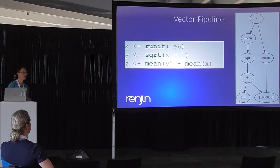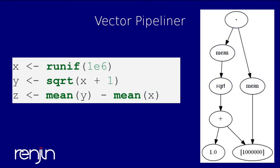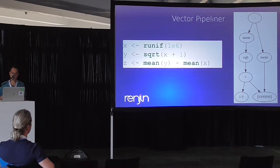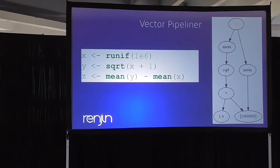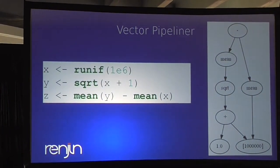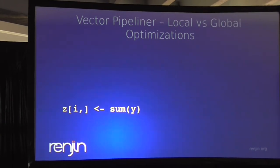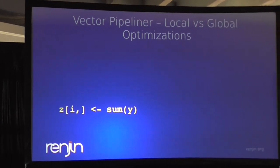For example, here are just three lines of R code: the first allocates data, the second transforms it by taking the square root of one plus x, and then we subtract the two means of X and Y. If you look at it as a graph of that computation, you can see those two means don't depend on each other — so in principle you could evaluate them in parallel. The question is how do we do that in the R language without forcing the programmer to write it explicitly?